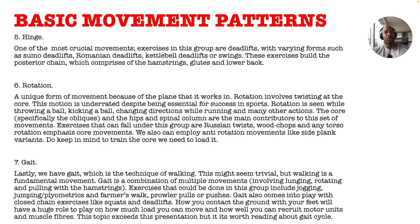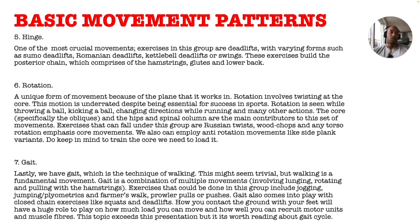Number six: Rotation — a unique form of movement because of the plane it works in. Rotation involves twisting at the core and is underrated despite being essential for success in many sports. It's seen in throwing, kicking, changing direction while running, and many other actions. The core — specifically the obliques, hips, and spinal column — are the main contributors. Exercises include Russian twists, wood chops, and any torso rotation core movements. You can also employ anti-rotation movements like side plank variations. To train the core effectively, you need to load it — if the loading potential of the exercise is low, there's no scope to progress and develop strength, power, and hypertrophy.